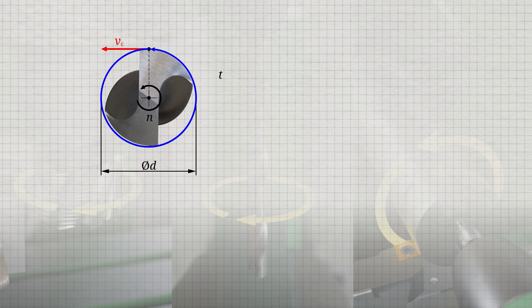This time for one revolution is also referred to as period T. The point on the circumference of the drill thus moves within the period duration a distance S equal to the drill circumference. This distance corresponds to the circumference of a circle and is given by the product of the constant pi and the drill diameter D.